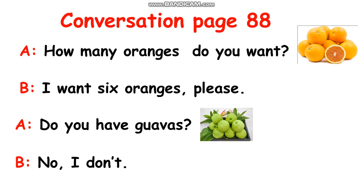Now read with me all together. One, two, three — A: How many oranges do you want? B: I want six oranges, please. A: Do you have goas? B: No, I don't. Okay, everyone, read again, please — loudly. One, two, three. Do you have goas? No, I don't.